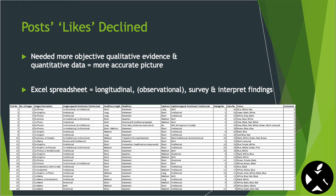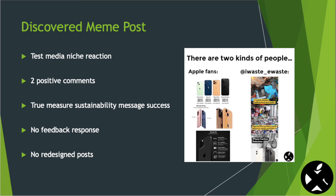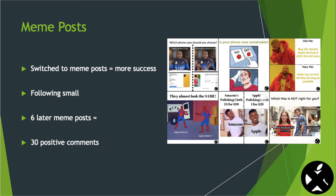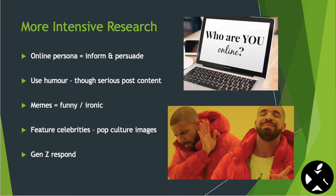I created an Excel spreadsheet for a longitudinal observational survey and interpreted the findings. I discovered a meme post I uploaded to test my media niche's reaction obtained two positive comments — the true measure of my sustainability message's success. But I hadn't responded to this feedback by redesigning my posts. I then switched to all meme posts with more success. My following is still small, but my six later meme posts have produced 30 positive comments. More intensive research taught me that my online persona can persuade by using humour, even though the post's content is serious.